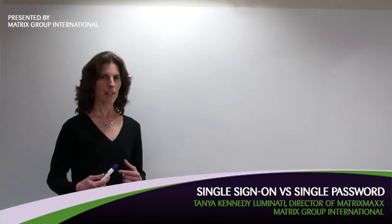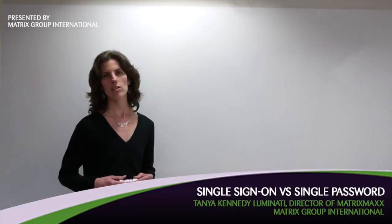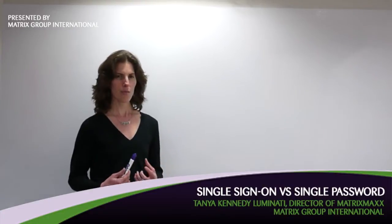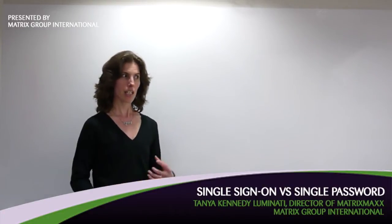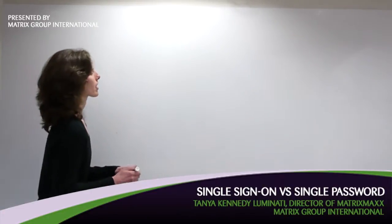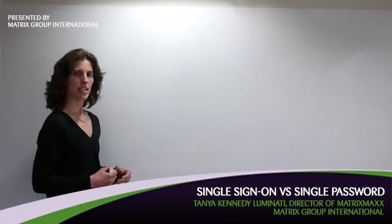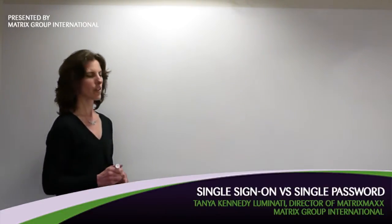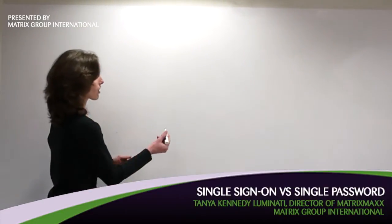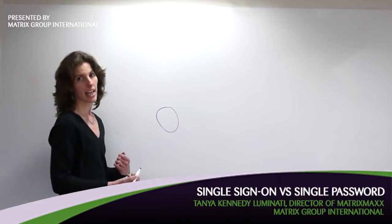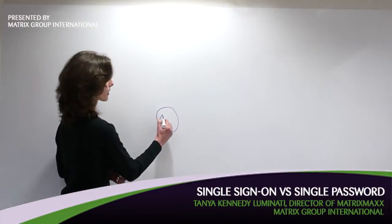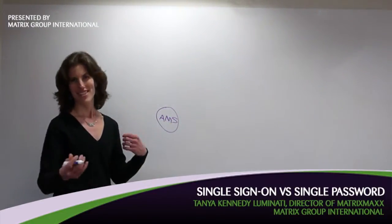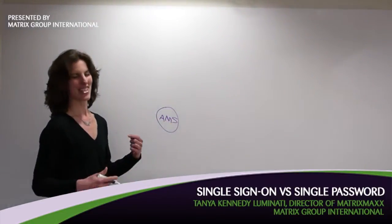SSO is an abbreviation for single sign-on. Probably the easiest way to explain it is with a diagram. The concept is that you've got multiple systems serving your organization. So let's say that you have a main database — that's probably your AMS, your association management system.